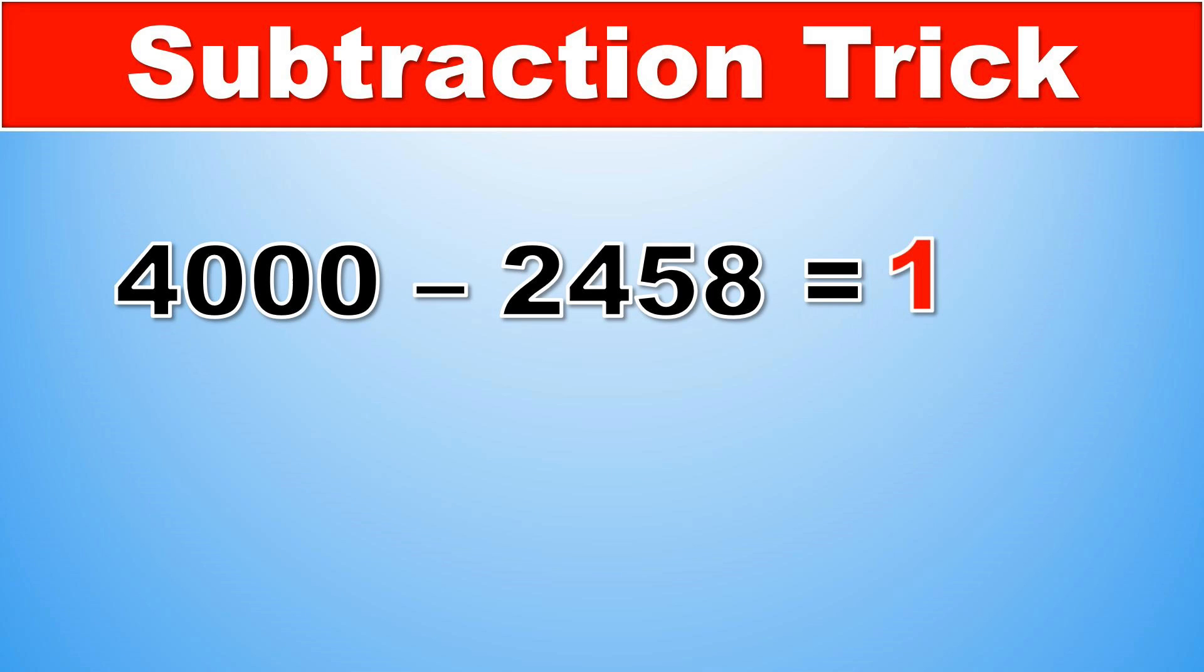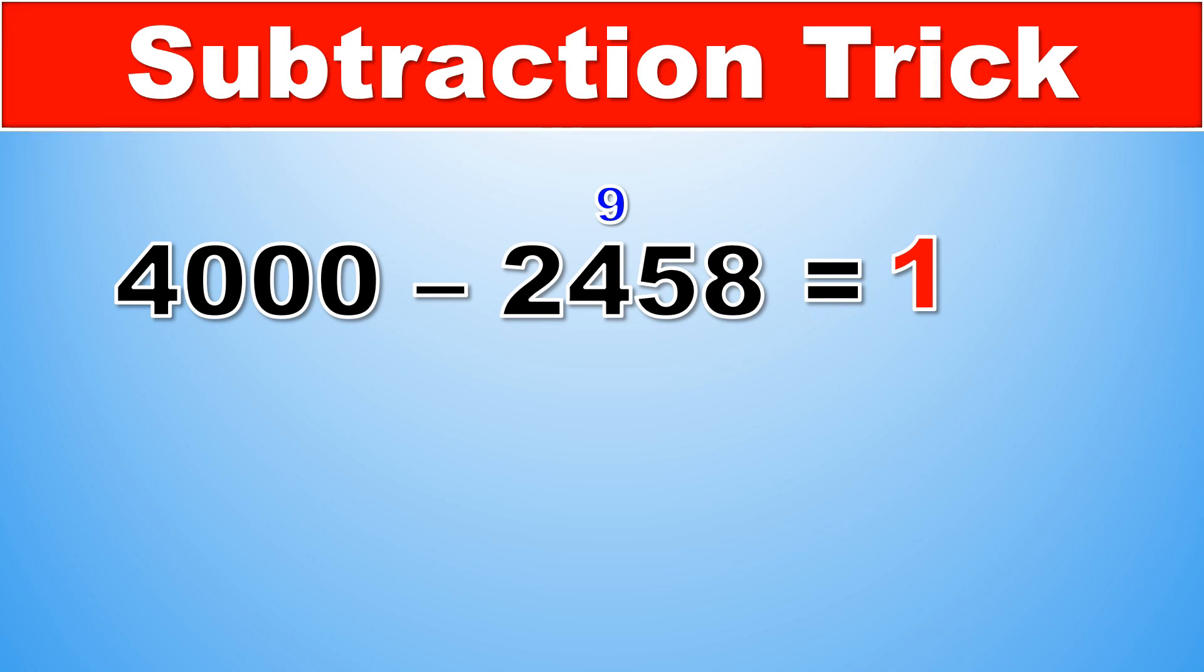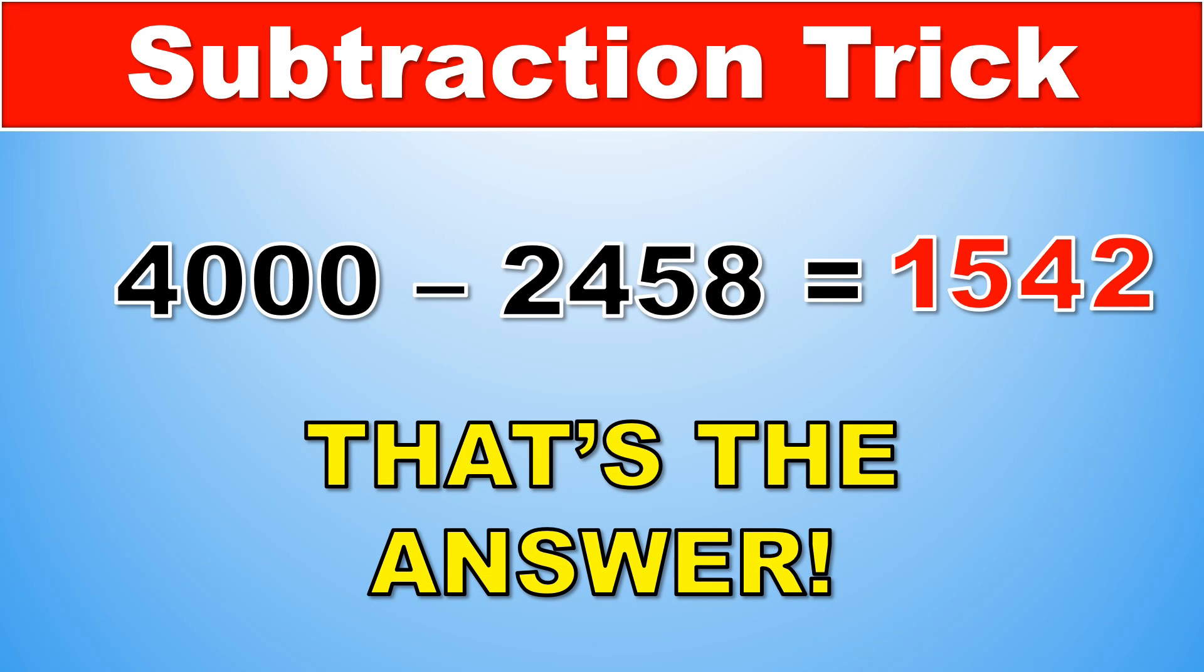Let's take a look at the remaining part, which is 458. This one follows a strategy known as all from 9, last from 10. This means you have to subtract each digit from 9, except the last one, which is subtracted from 10. This means that we have to subtract 4 from 9, so that means 9 minus 4, which is 5, and then 9 minus 5, which is 4. And then, because 8 is the last digit, we must subtract it from 10, which means 10 minus 8 is 2. And that is your answer, 1,542.